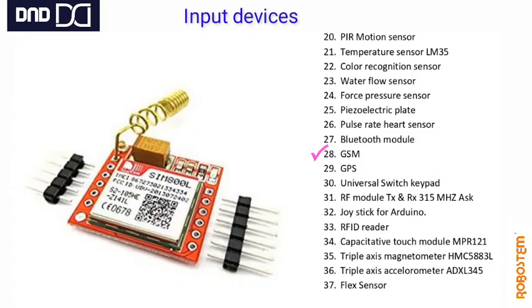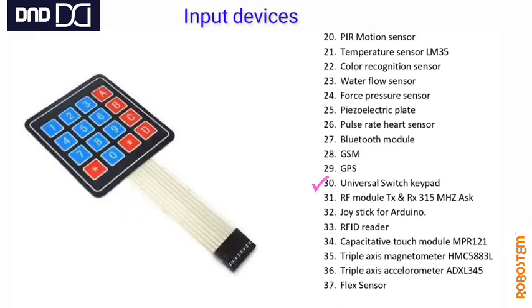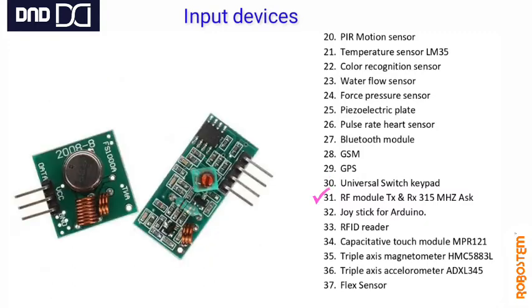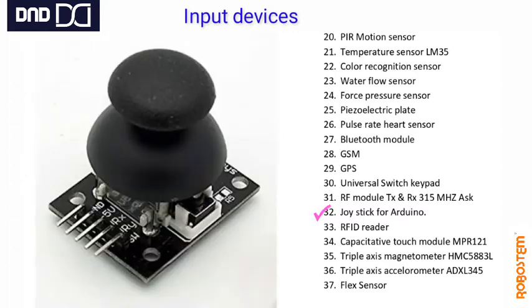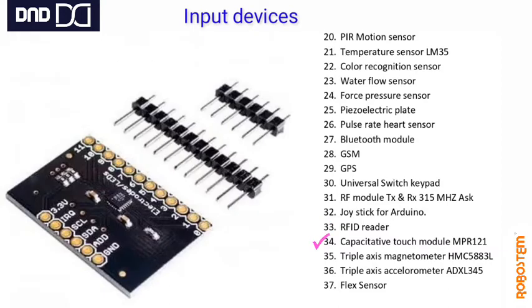GSM module is used for most projects requiring mobile communication. GPS is the global positioning system used in most projects. The universal switch keypad has number keys from 0 to 10. RF modules are used for wireless communication. The joystick can be used for game station control. RFID card reader allows swiping an RFID card or punching card.